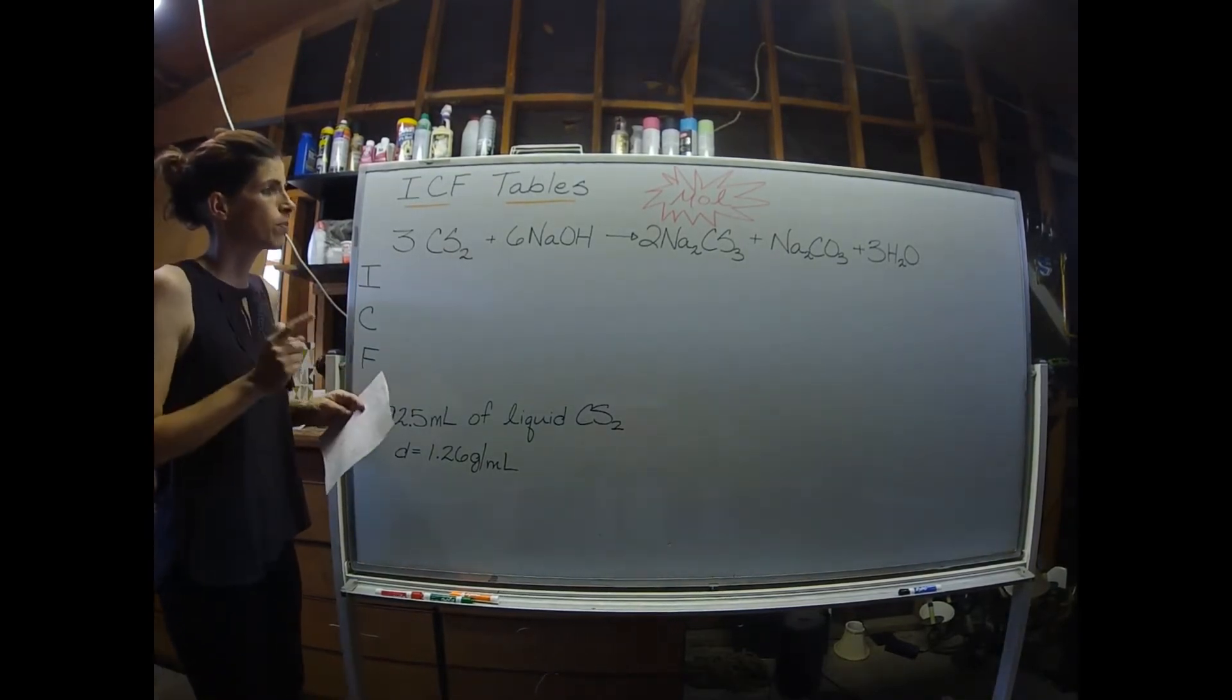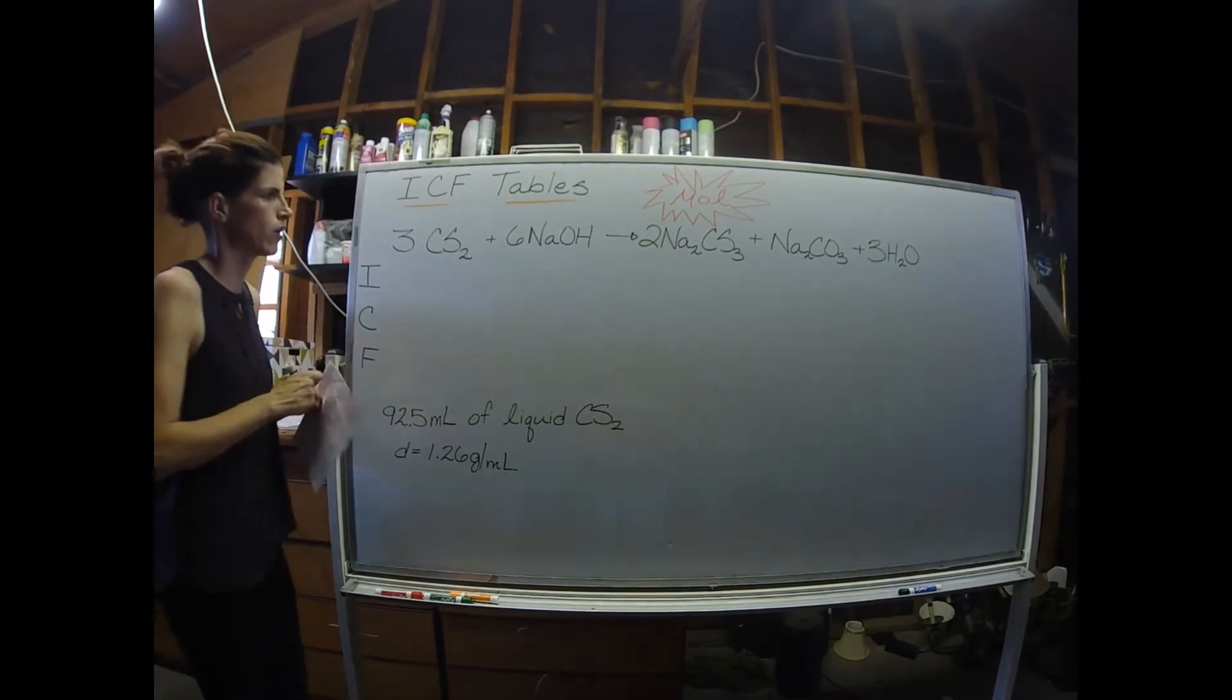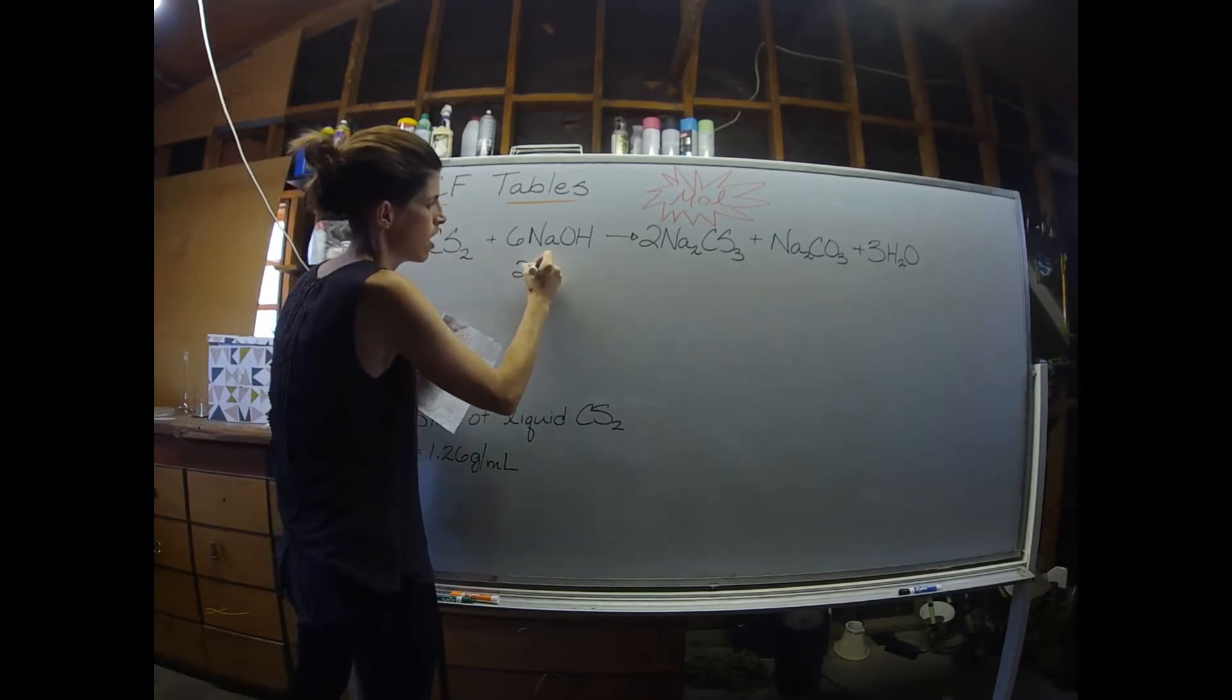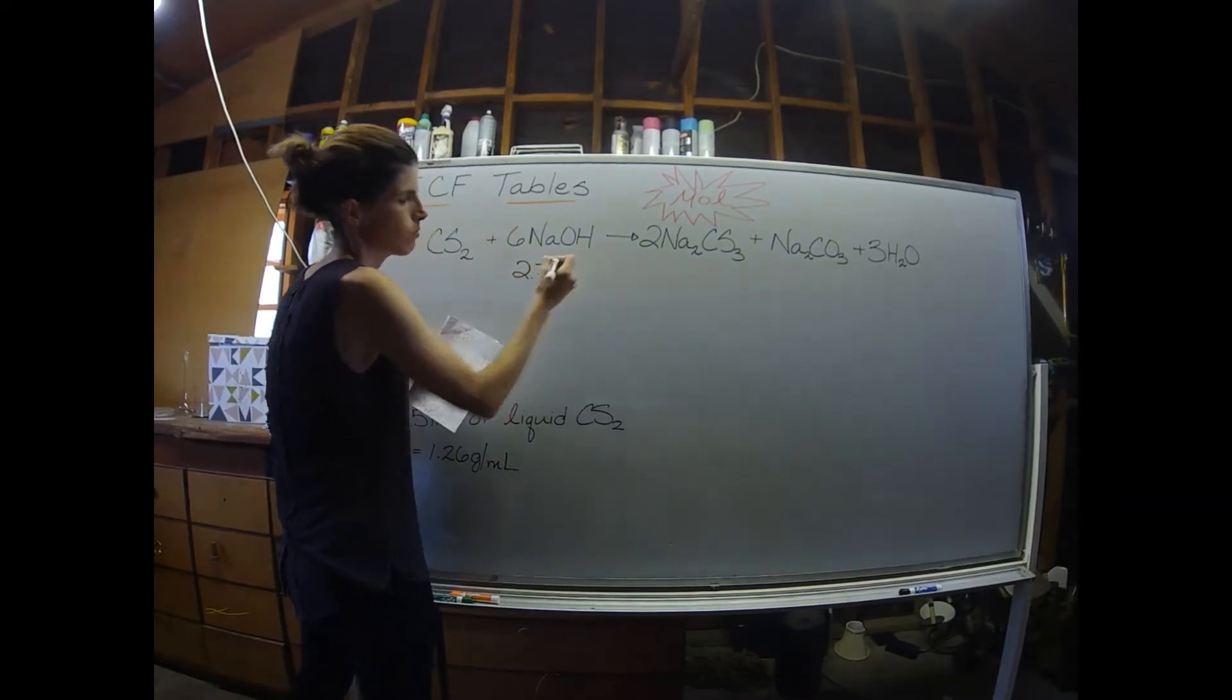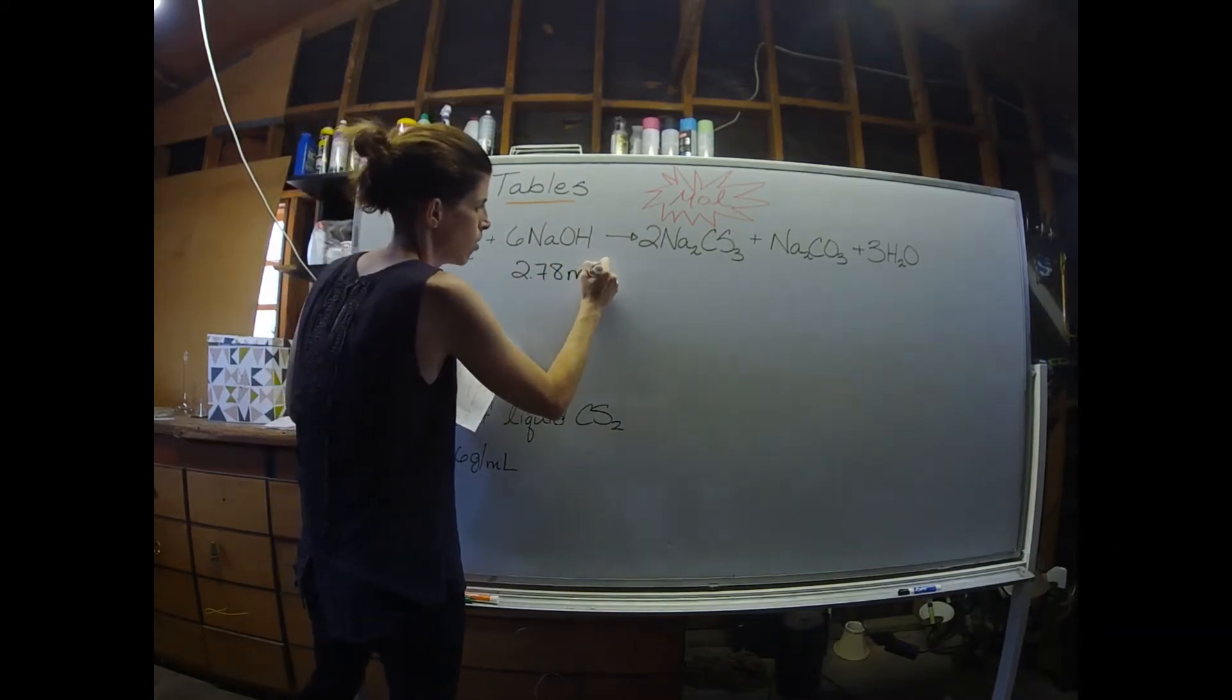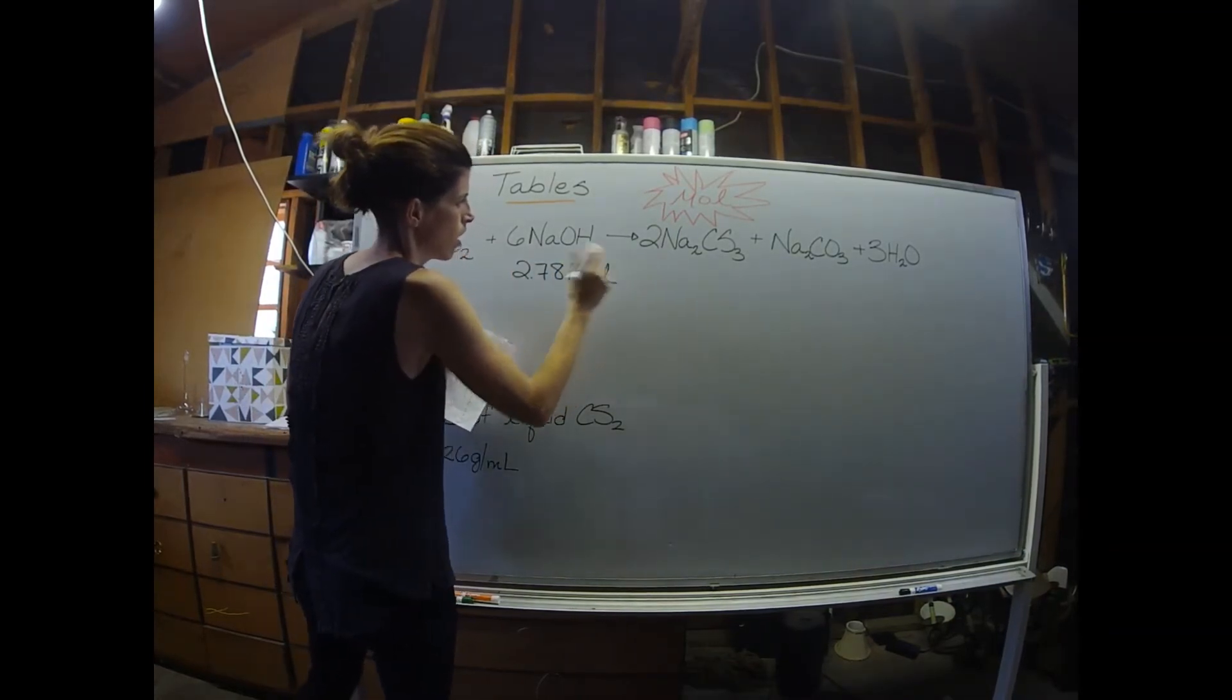In this problem, they did tell us how many moles of sodium hydroxide we have. So I can enter that value. Initially, before we started the reaction, we had 2.78 moles of sodium hydroxide.